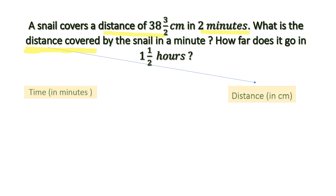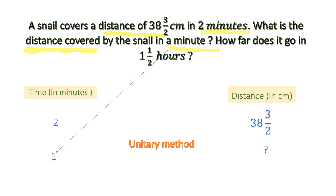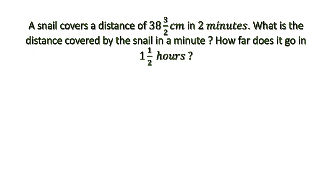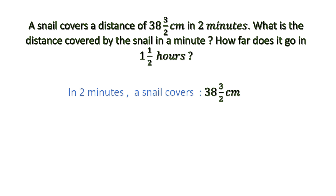From the first line, the distance is 38 and 3/2, so we write 38 and 3/2 under distance. The snail is covering this distance in 2 minutes, so we write 2 under time. What we need to find is the distance in one minute, as the question asks how much distance is covered in a minute. We are going to use the simple unitary method. The value for two minutes is given; we have to find the value for one — it's a many-to-one problem, so we will do division. Let's write it in proper statements: in two minutes, a snail covers 38 and 3/2 centimeters, with distance on the right-hand side.